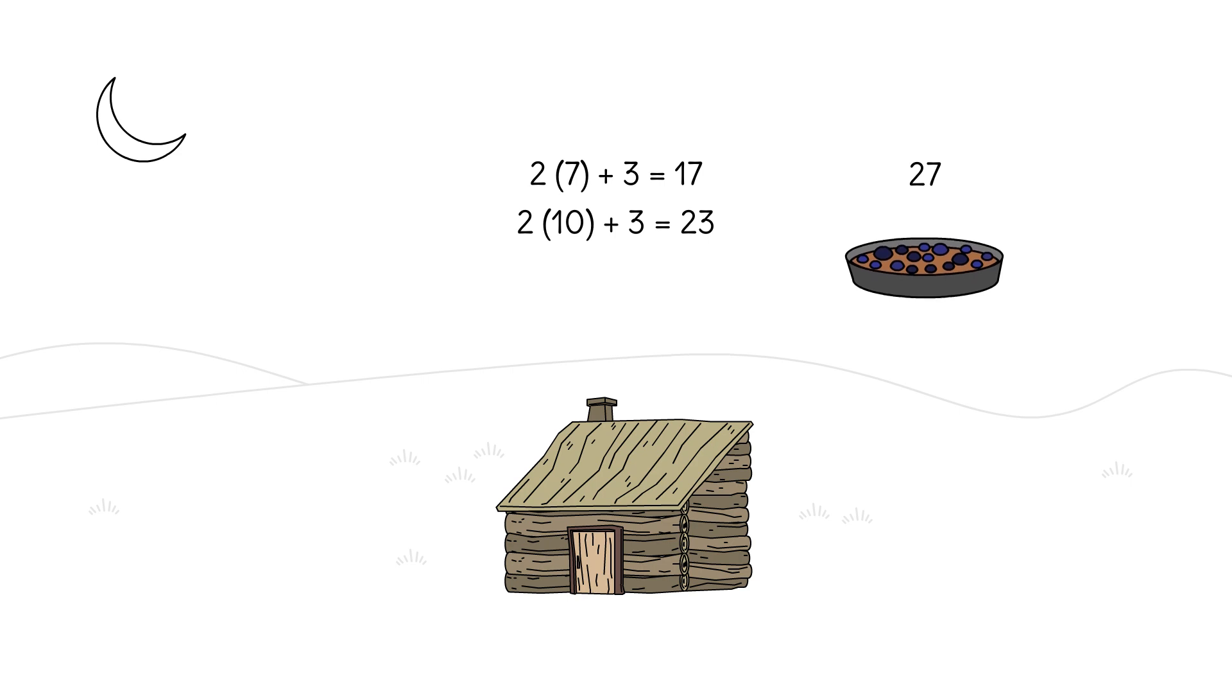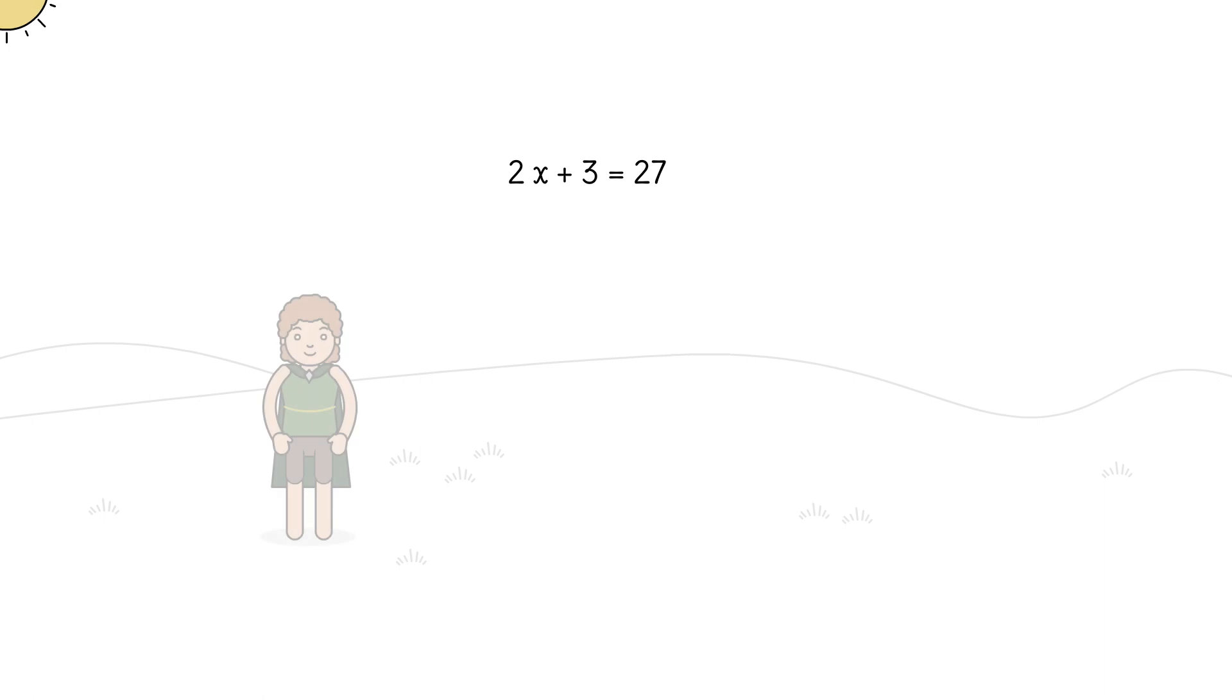We can crack this question by writing an equation. We want to know what x makes 2x plus 3 equal 27. Devon wakes up ready to solve the equation. All he has to do is reverse the magic from 27 in order to find x.